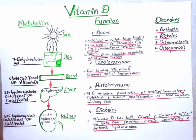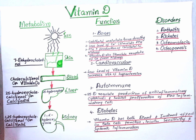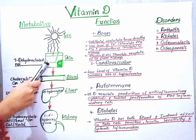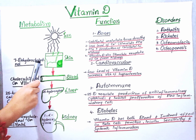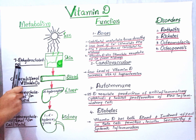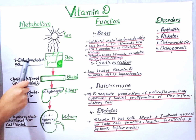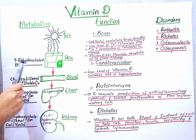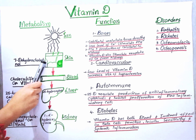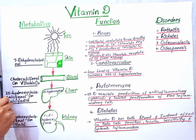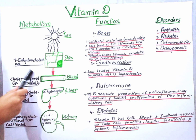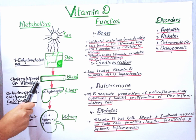We get vitamin D from ultraviolet exposure from sunlight. This is the first step in the synthesis of a precursor vitamin D to an active vitamin D. Our skin, specifically the epidermis, possesses a cholesterol named 7-dehydrocholesterol, and our exposure to the sun triggers the conversion of this cholesterol into cholecalciferol. So UV rays convert 7-dehydrocholesterol into cholecalciferol, which is also named vitamin D3.